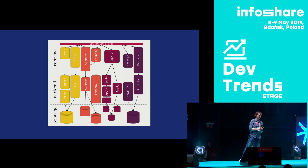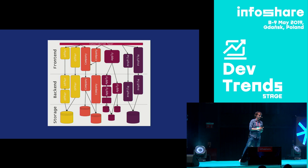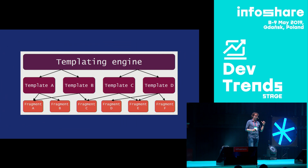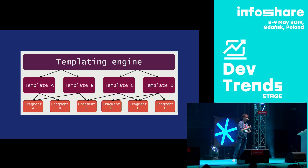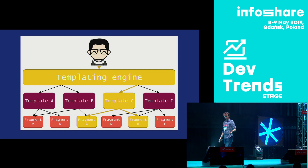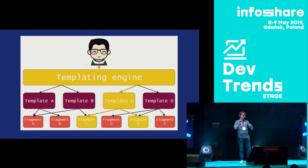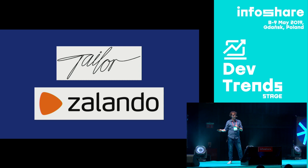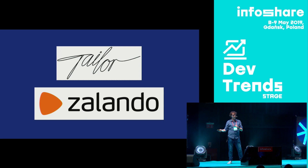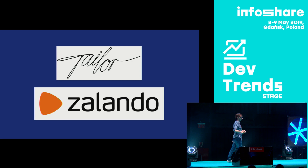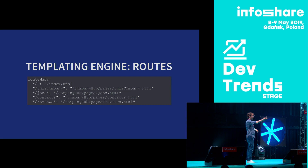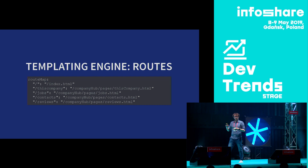Let's go back to the diagram I showed before — a representation of our application. Let's focus on this small consolidation layer on top of everything. We call this layer the templating engine. On a ground level, the templating engine is supposed to get users' requests, translate them to some specific template, and populate that template with fragments or micro-frontends. We created this solution with Taylor, which is an open source library provided by Zalando, of course heavily modified. We use Taylor because it enables us to create all of those connections in a nice, convenient, human-readable way.